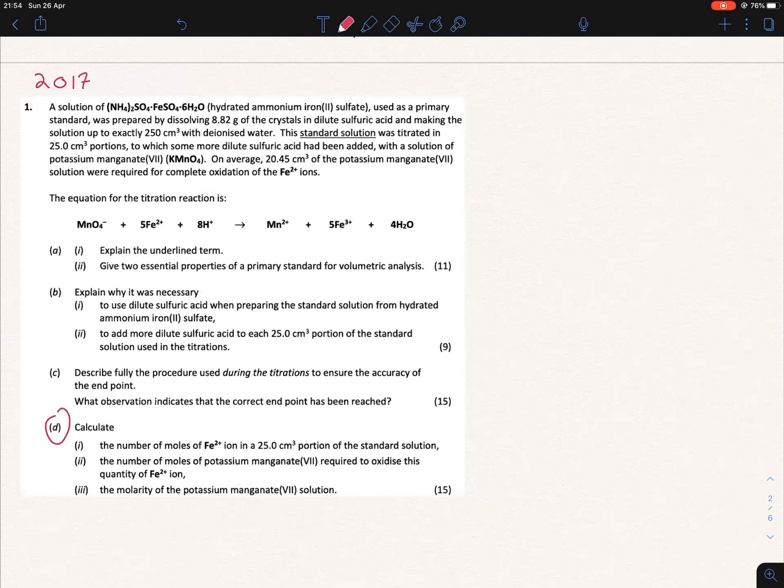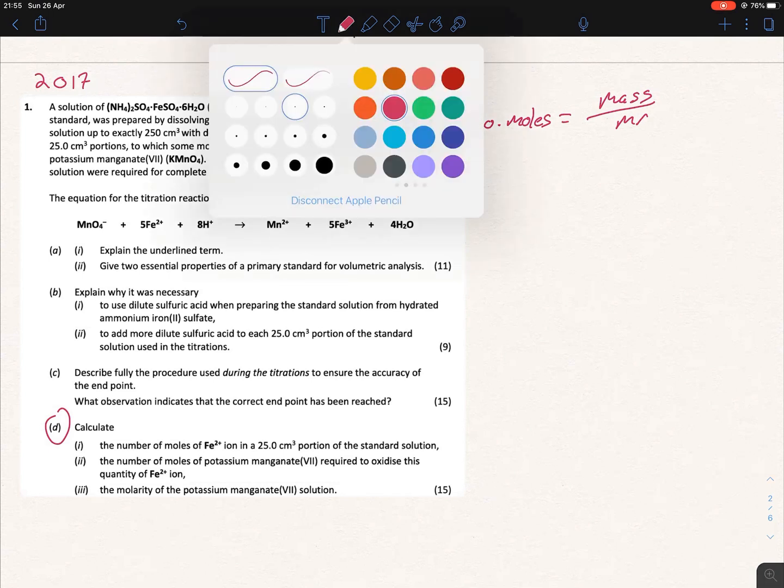So let's start off. Calculate the number of moles of iron in 25 cm³ portions of a standard solution. Now, again, divide it up into two parts. The first part, figuring out the number of moles, and the second part, putting it into 25 cm³. So let's look at our formulas and write them down. Number of moles equals your mass over your MR. We have the mass—if we read back up at the top, we're told that 8.82 grams was made up to 250 cm³ of water.